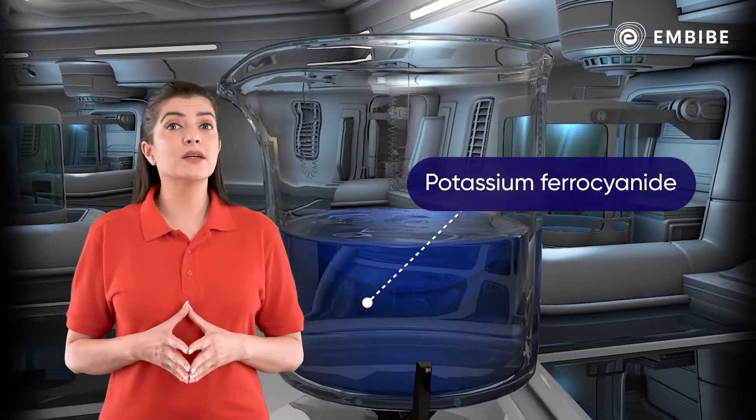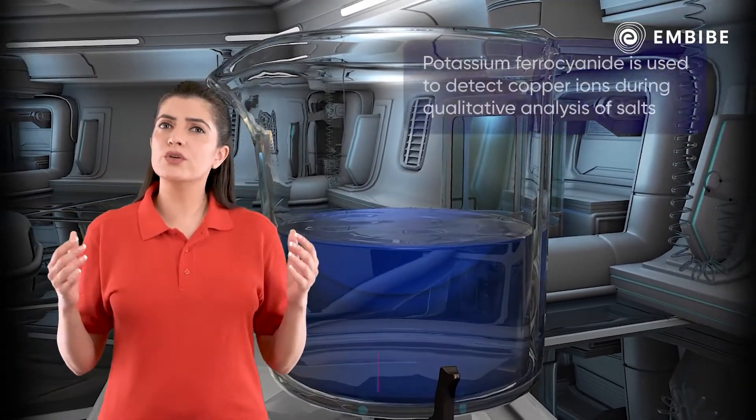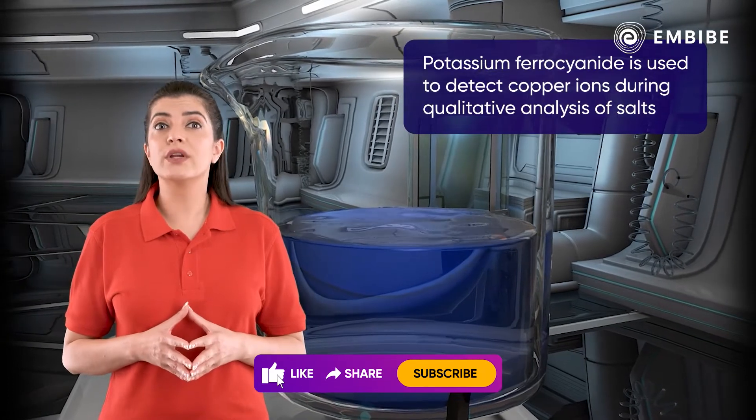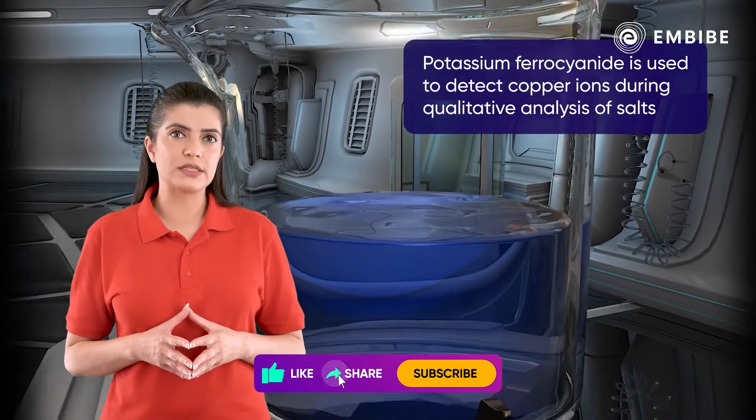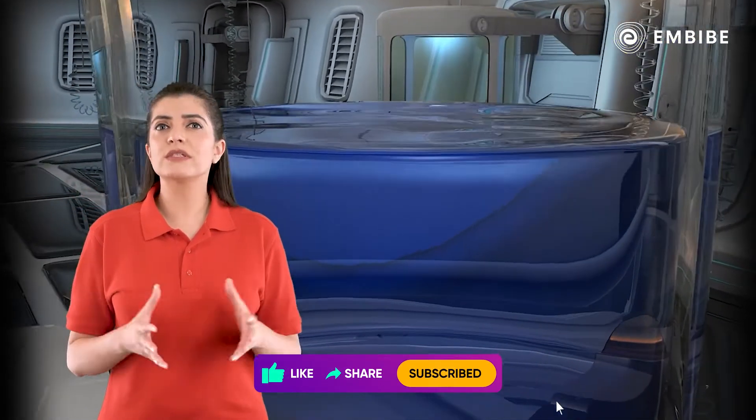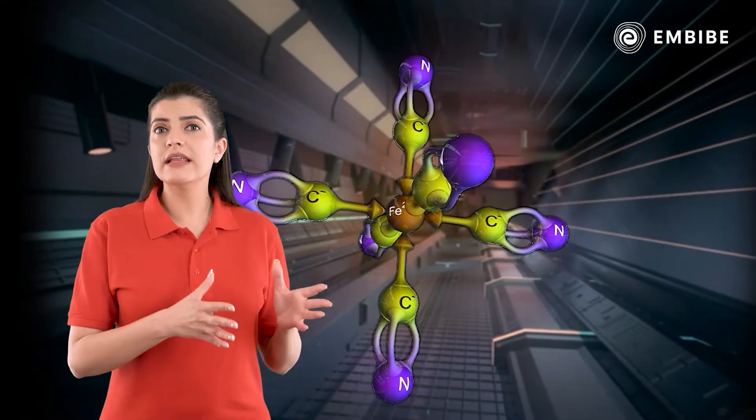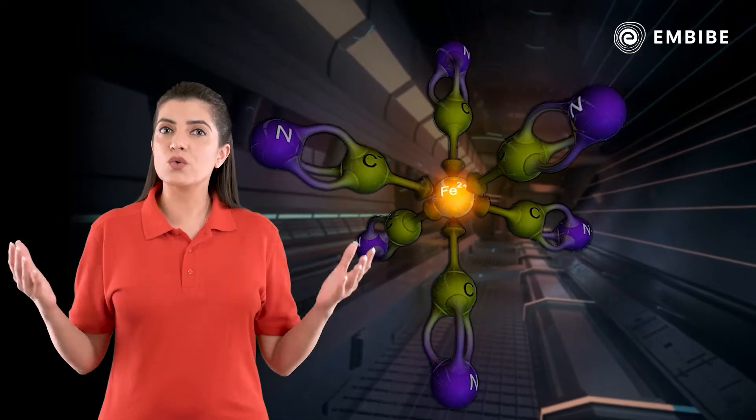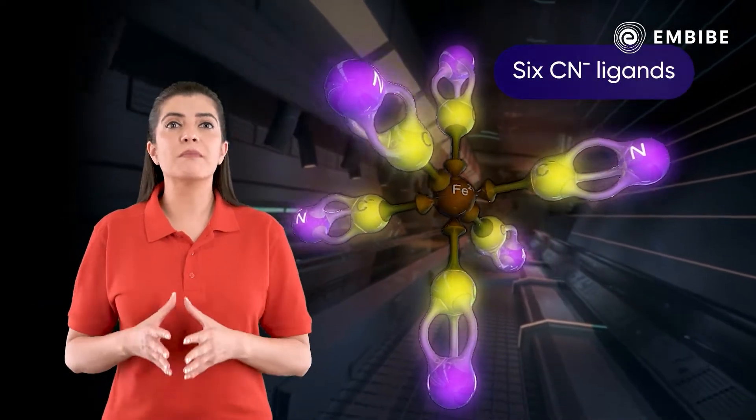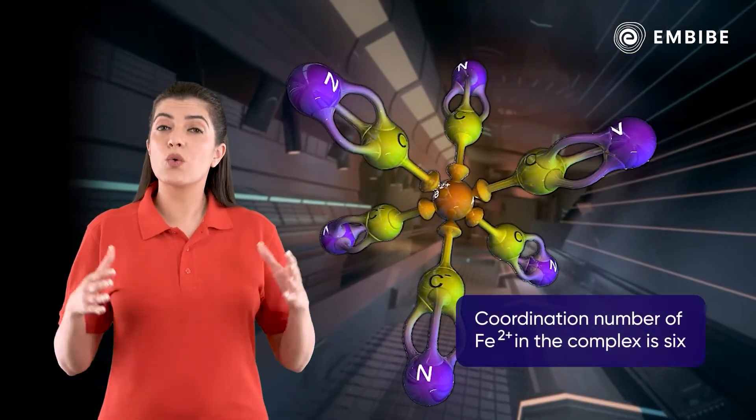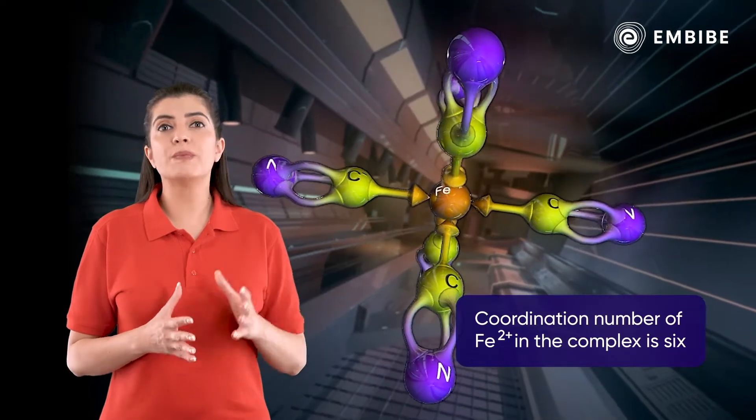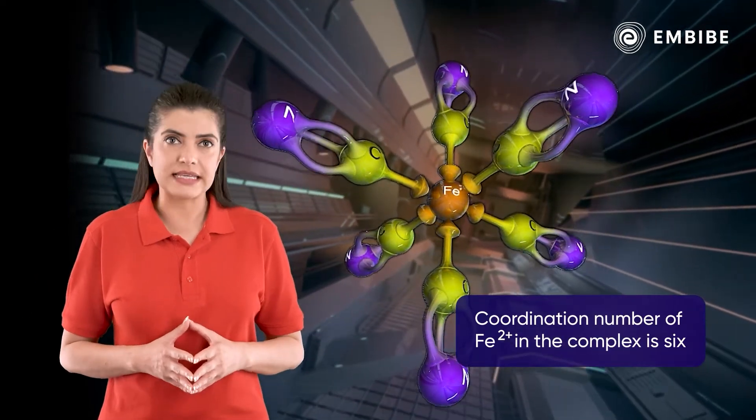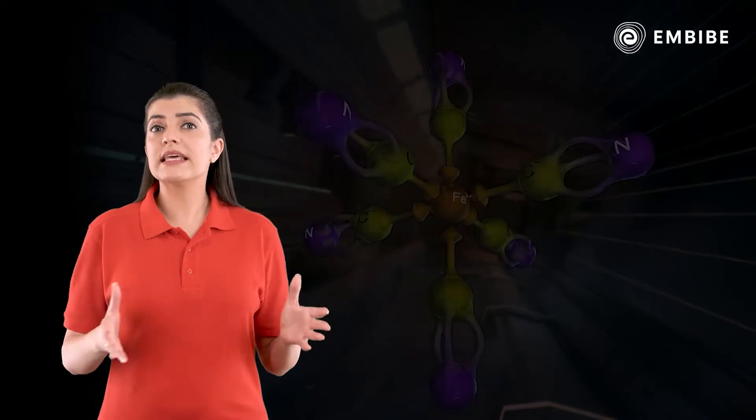Potassium ferrocyanide is a common laboratory reagent used to detect copper ions during qualitative analysis of salts. In the potassium ferrocyanide complex, the iron atom Fe is in the +2 oxidation state and is coordinated with six CN- ligands. Thus, the coordination number of Fe2+ in this complex is six.